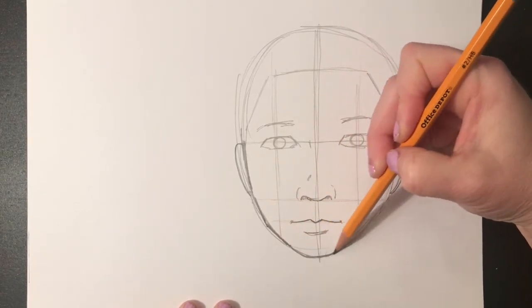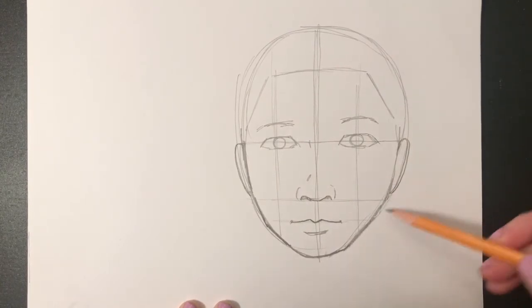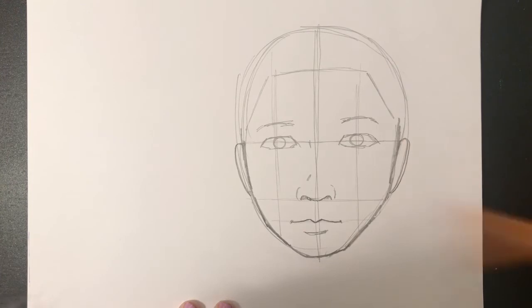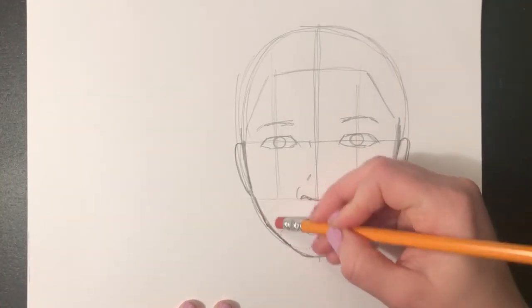At this point I like to change the shape of the jawline and kind of straighten things up, clean it up a little bit, add a little more angles, because that egg shape from the beginning isn't exactly how I want it to be.